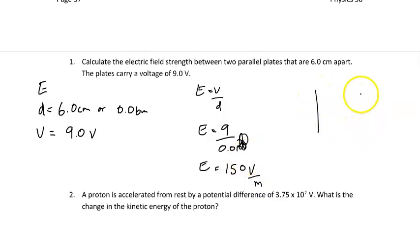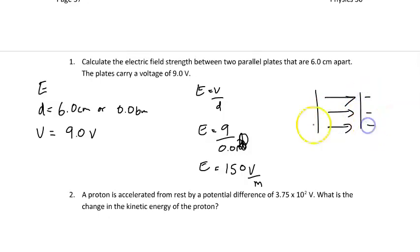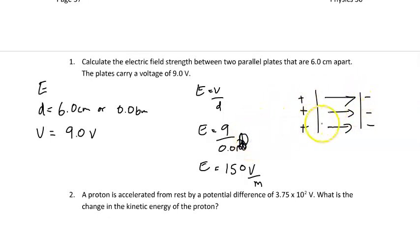Because these are parallel plates, that field is going to be uniform throughout. I'm putting the positive on the left side and the negative on the right side. It's a uniform field in here — it doesn't matter whether it's here, here, over here. The electric field strength is the same everywhere between those two plates.